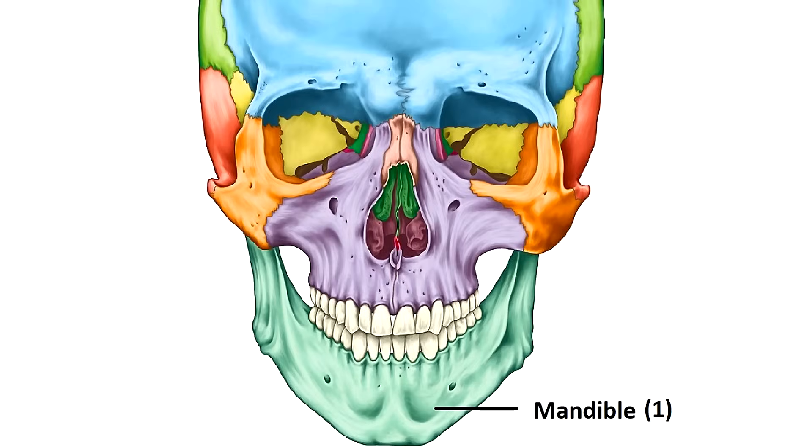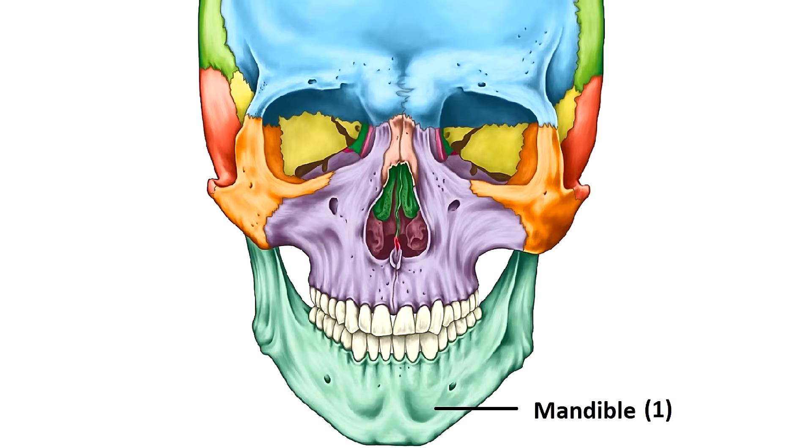Now let's cover the 14 facial bones. Remember, all of these bones are pairs except for two which are single, so let's start with the single bones. First we have the mandible, which is the jawbone. A lot of people say they find a chiseled jawline attractive — in other words, they want a manly mandible. The mandible is actually the strongest bone in your face, so even if you don't have a strong jawline, at least you can have a strong jaw bone.